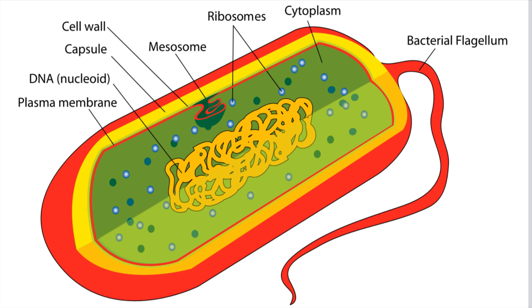A bacteria cell has an outer covering called a capsule or a slime layer. Bacteria that have a thick outer capsule are called gram positive, and ones that have a thin outer capsule are gram negative.